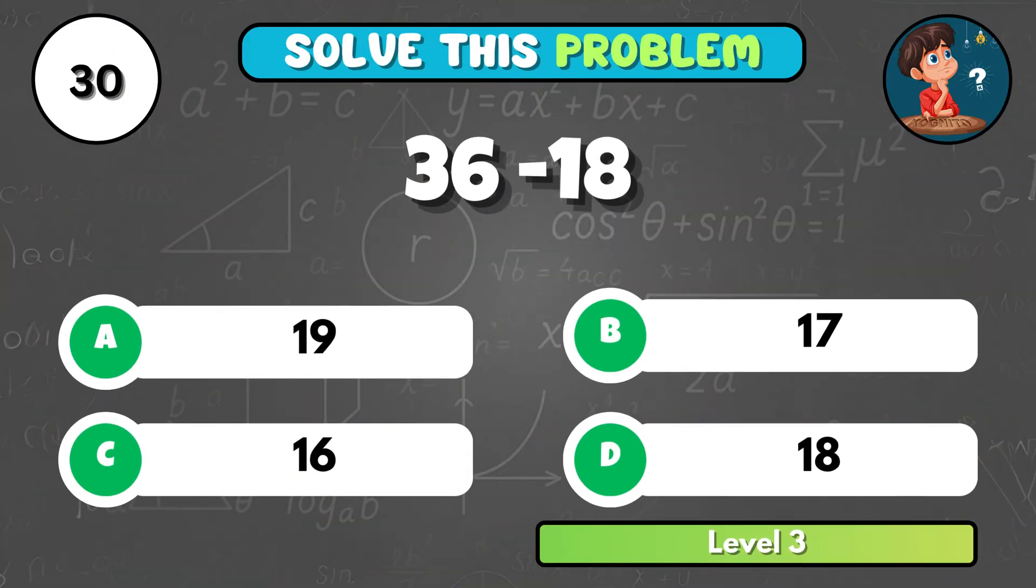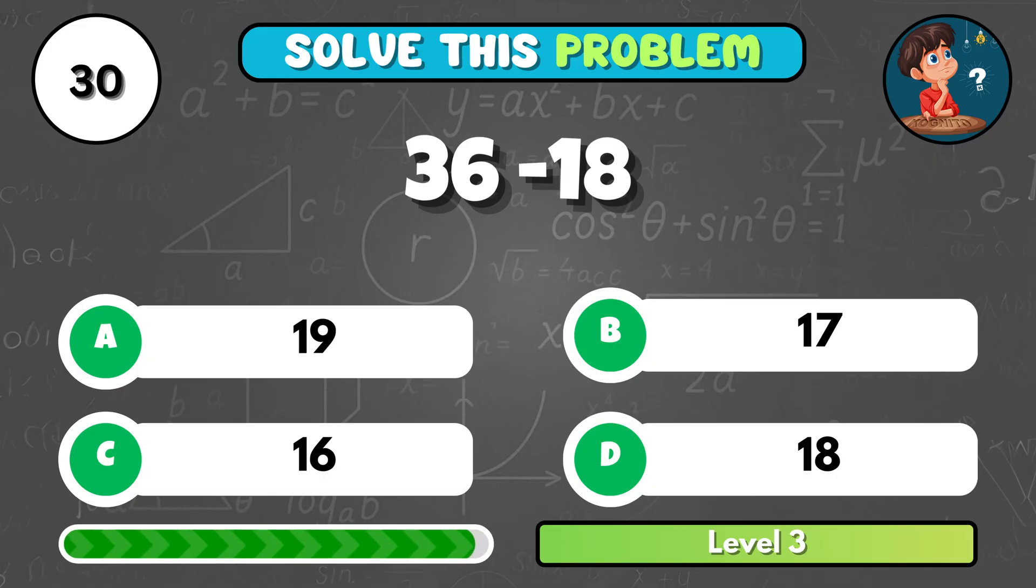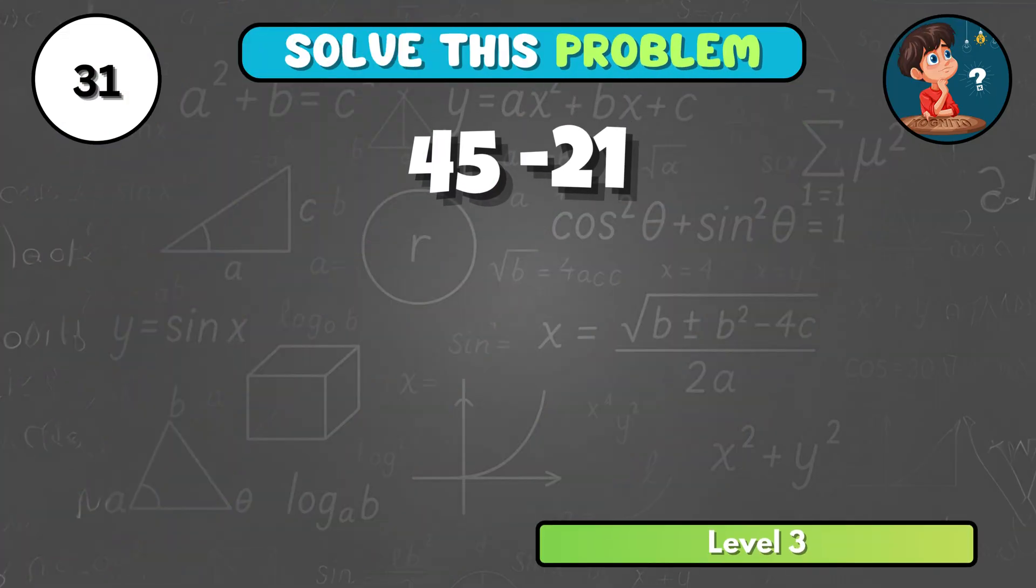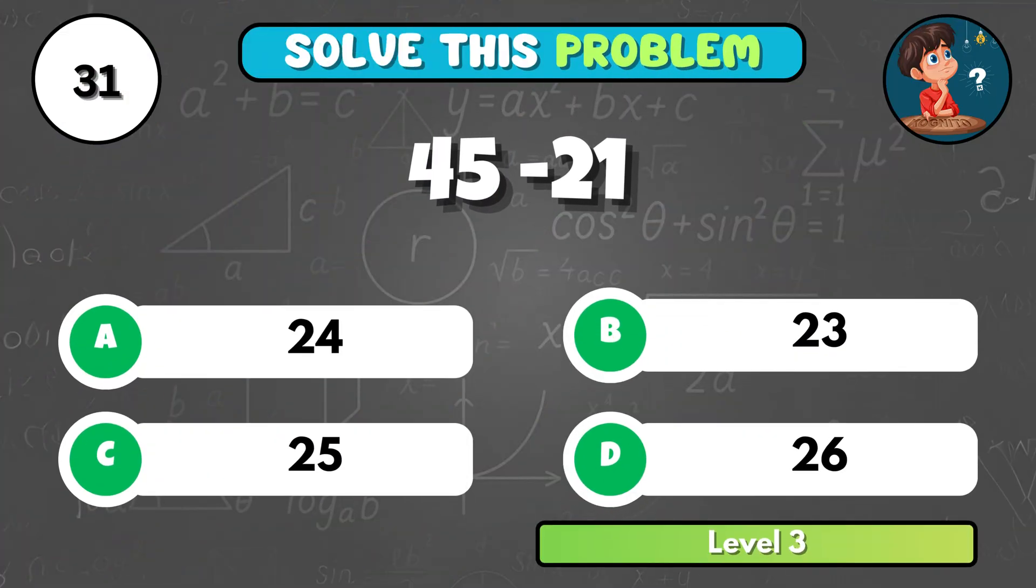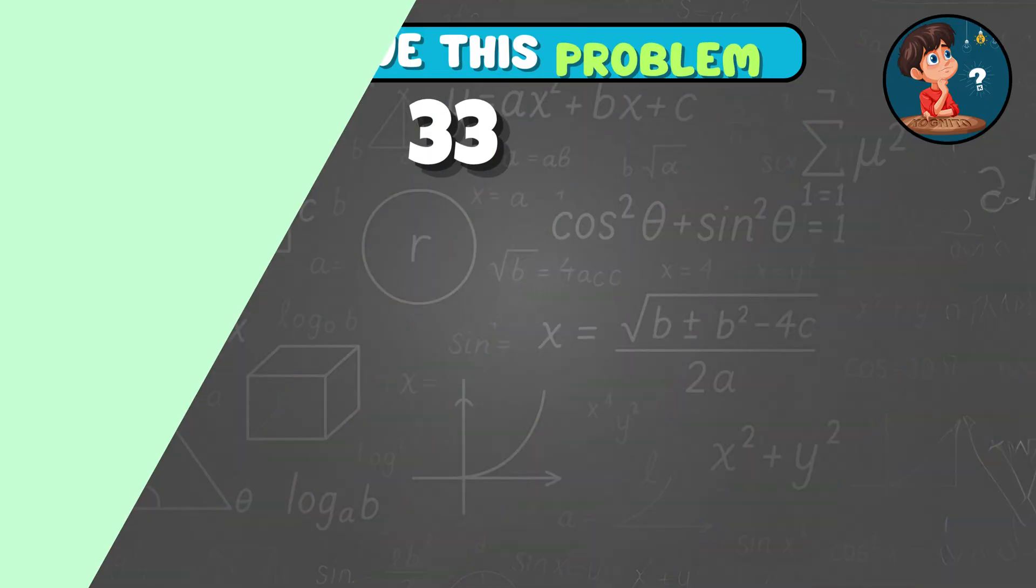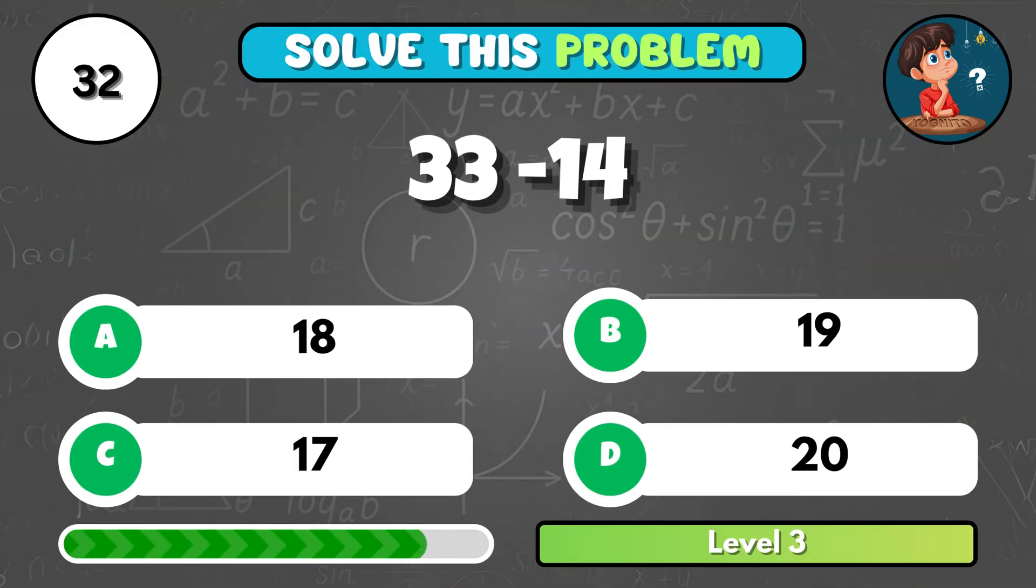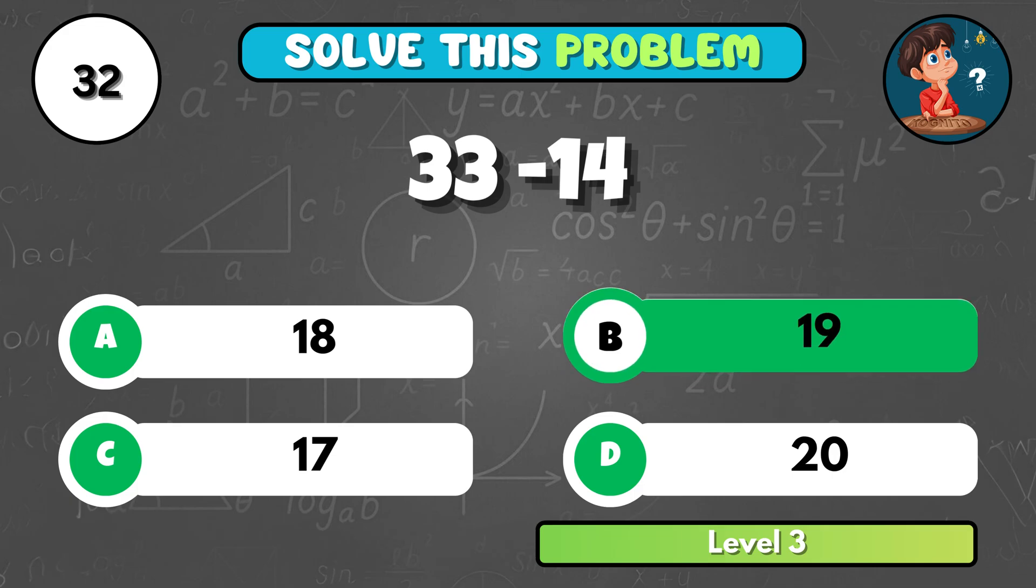How about 50 minus 25? That's D, 25! Here's a good one! 36 minus 18 is... It equals D, 18! Now solve this, 45 minus 21 gives you what number? That's A, 24! Try this challenge! 33 minus 14 equals what? It's B, 19!